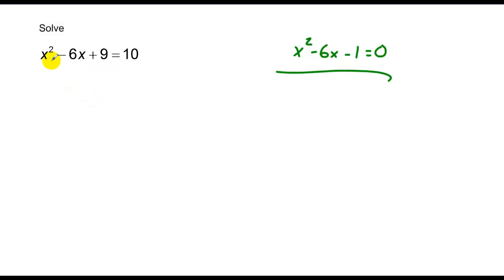But I do notice that, hey, take a peek. This is a perfect square. If I factor that, that's x minus 3 times x minus 3. And that's equal to 10. x minus 3 times x minus 3 can also be expressed as x minus 3 quantity squared. And now it's just like the problem we had in the last example.